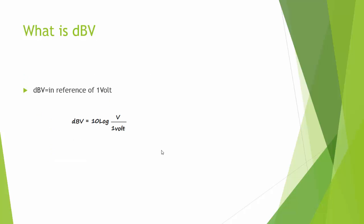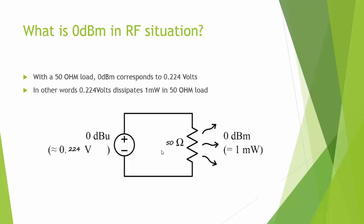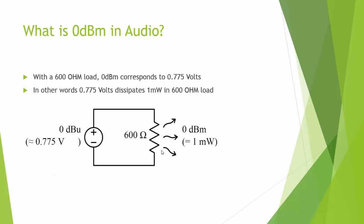For dBV, the reference is 1 volt, so dBV = 20 log of voltage over 1 volt. A practical note: in RF applications with a 50-ohm load, 0 dBm corresponds to 0.224 volts — meaning 0.224 volts dissipates 1 milliwatt into a 50-ohm load. In audio with a 600-ohm load, 0 dBm corresponds to 0.775 volts, which dissipates 1 milliwatt in 600 ohms.